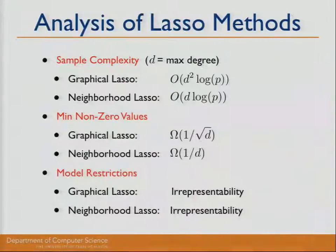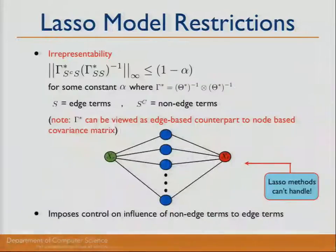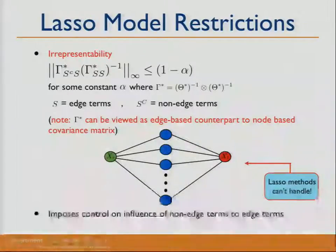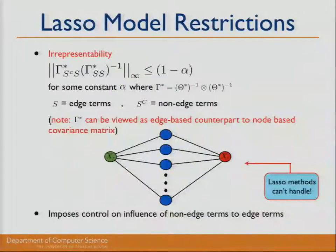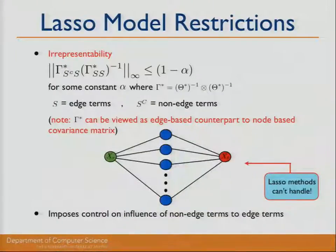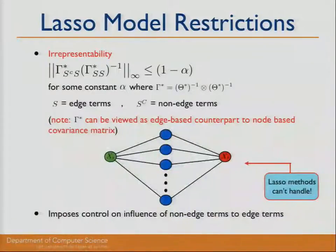Both methods require e-representability as a model restriction. Let S be the support of the true edge set, and S-complement be the non-edge terms. Gamma star can be thought of as an edge-based counterpart to the node-based covariance matrix — essentially the covariance between possible edges in the model. E-representability places an upper bound on the influence of non-edge terms on the edge terms. Graph structures where a green and red node share many common neighbors but have no direct edge often fail this condition, causing lasso methods to fail.